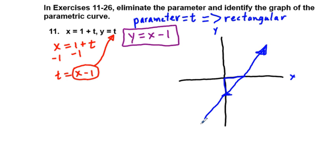The arrow is in the direction of t increasing. At x equals 0, that's when t is going to be equal to negative 1. Since t equals x minus 1, that's t of 0 minus 1, so that's t of negative 1, t of 0, and so on.